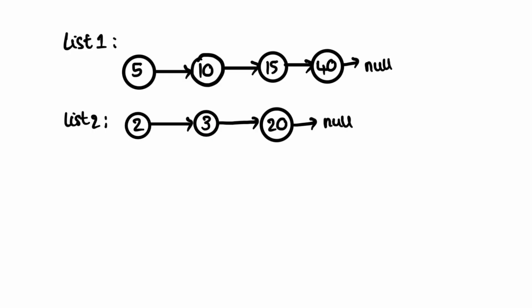Let's take an example and see how we can solve this. We start by creating a dummy node and initialize the value minus one to it. We also have a current node which will point to the next element. Both lists are sorted in ascending order, so we'll compare the elements at the beginning of each list.